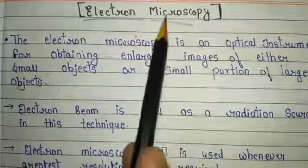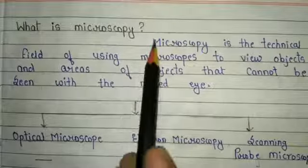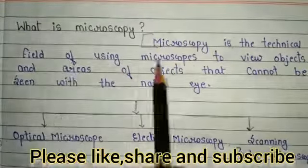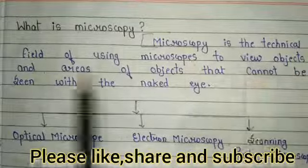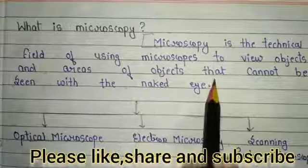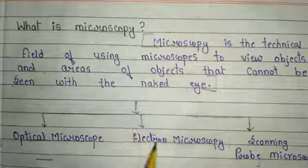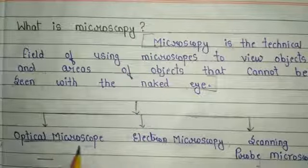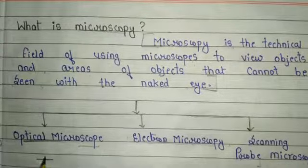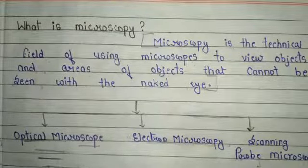Before we discuss about electron microscopy, we have to know about microscopy. Microscopy is the technical field of using a microscope to view objects and areas of objects that cannot be seen with the naked eye. Microscopy is basically of three types: optical microscope, electron microscopy, and scanning probe microscopy.